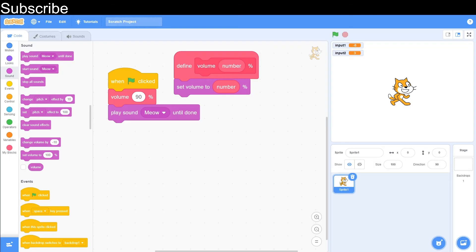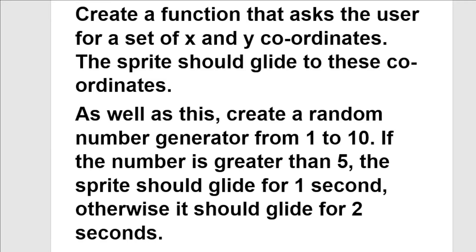And now I'm going to test you with a quick programming challenge before we call it for today. For this programming challenge, I want you to create a function that asks the user for a set of x and y coordinates, and then the sprite needs to glide to those coordinates. However there's going to be a random generator from 1 to 10 — if the number generated is greater than 5, the sprite should only glide for 1 second to the coordinates, and if it isn't, then it should glide for 2 seconds. You will need 3 parameters — that's all the hints I'm giving you, so pause the video and have a think.